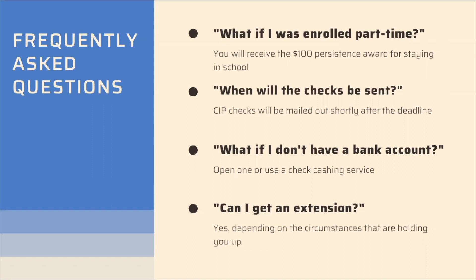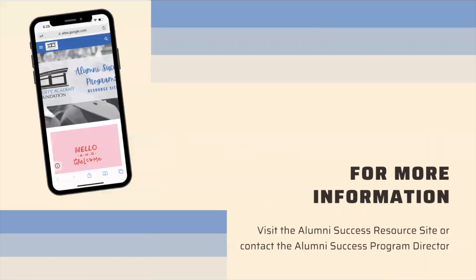Can I get an extension? Yes. Depending on the circumstances that are preventing you from completing the CIP application and eligibility requirements, there is a way for you to get an extension. You would just have to email or contact the Alumni Success Program Director with your specific details on what is going on with your situation. For more information, visit the Alumni Success resource site or contact the Alumni Success Program Director. Thanks for watching — I hope this was helpful.